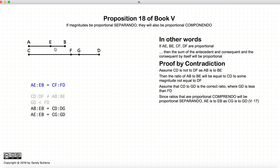Basically Proposition 17, which states that if AB to EB is equal to CD to DG, then AE to EB would be equal to CG to GD. This comes from Proposition 17.